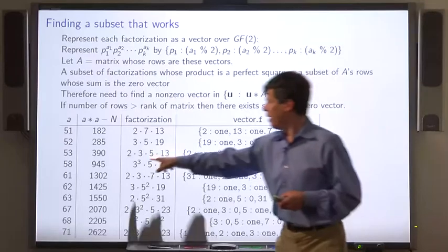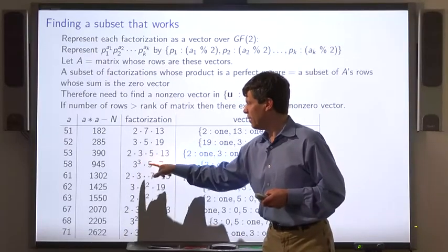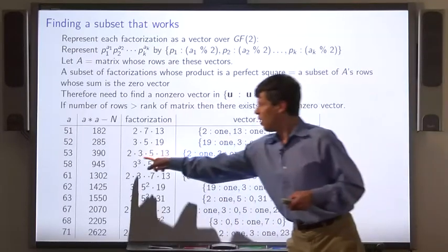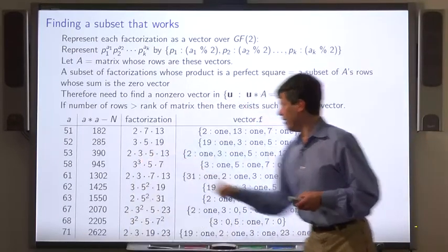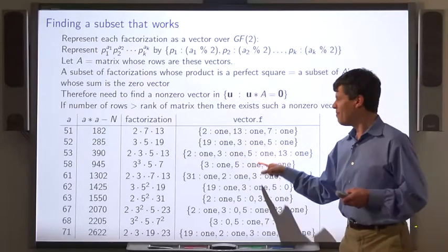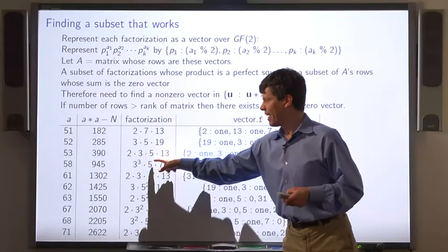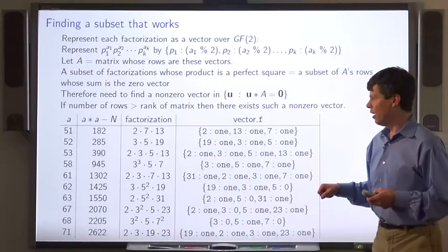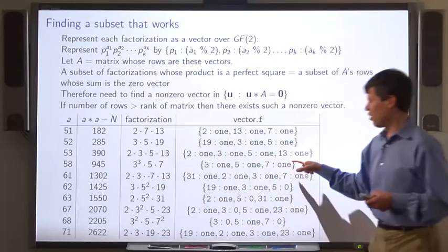Similarly, this factorization 3 to the 3 times 5 times 7 is represented by the vector where 3 maps to 1 because the exponent 3 is odd, 5 maps to 1 because the exponent, in this case 1, is odd, and 7 maps to 1 because the exponent of 7 is 1, which is odd.